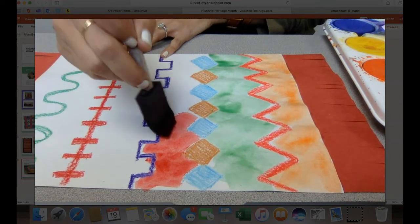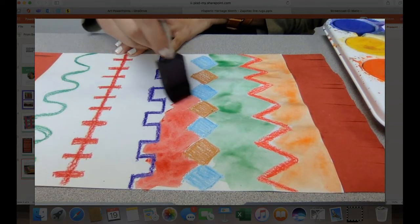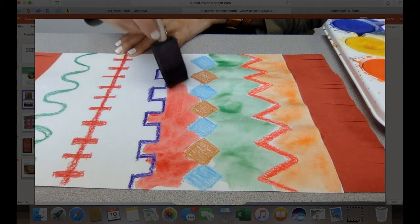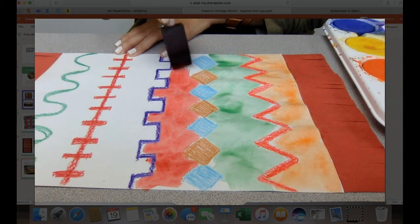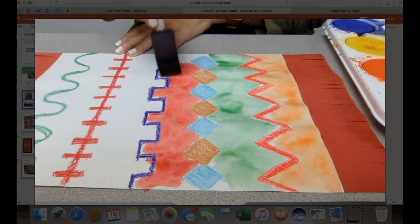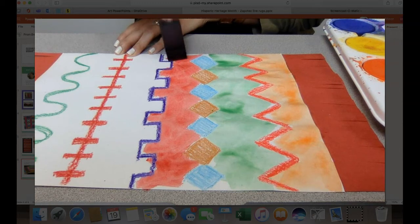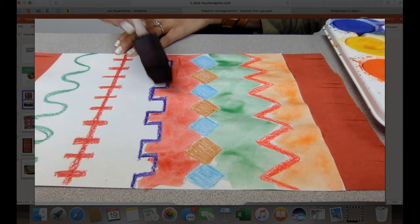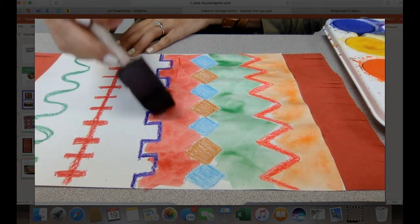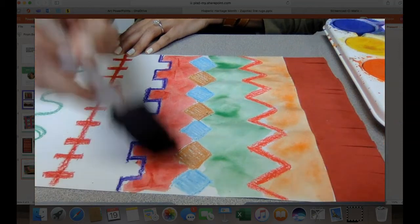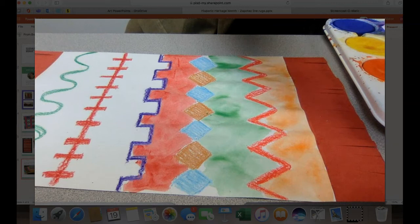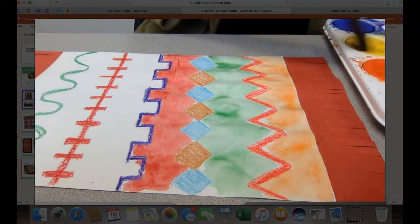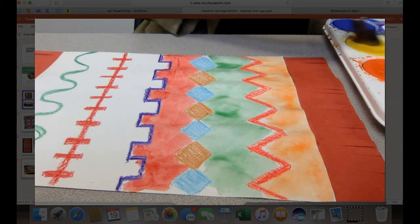And it's also important that we use crayons and not markers when we're doing our lines. Because if you use markers, it will bleed or the colors will start to fade when we use our watercolors. So that's why we used crayons. Because the crayons kind of act, kind of work as a wall. And they won't, they won't bleed or the colors won't go away once we do that.